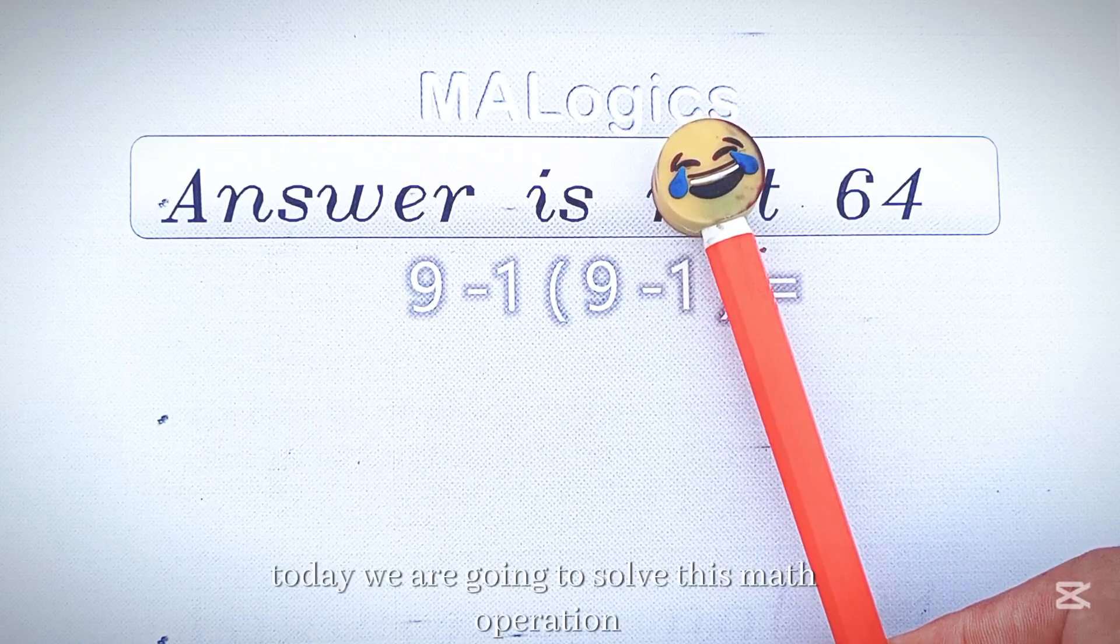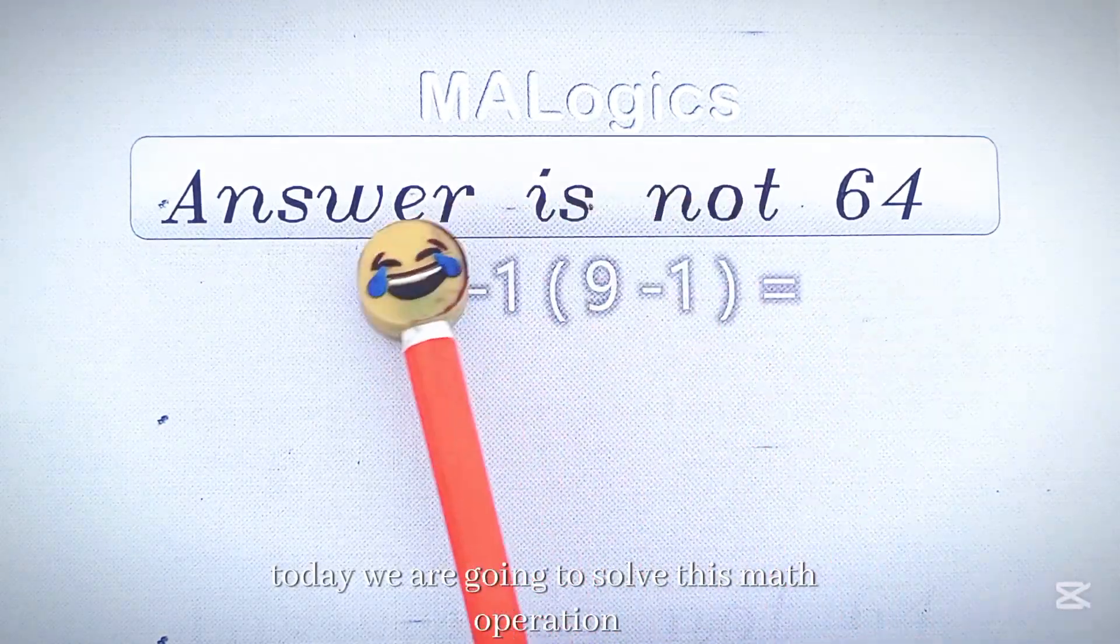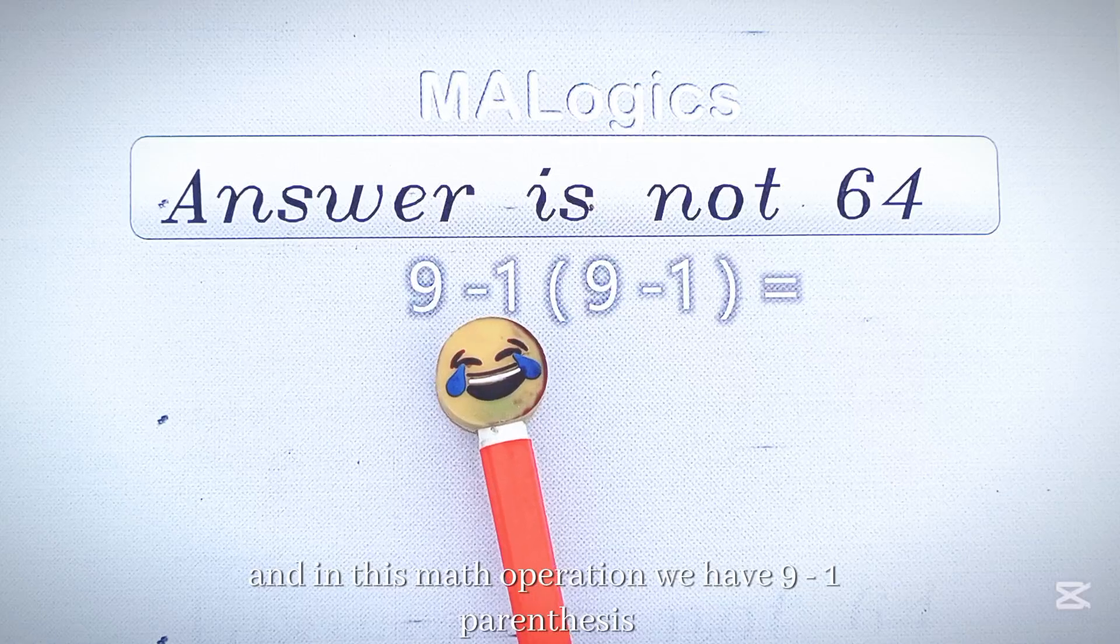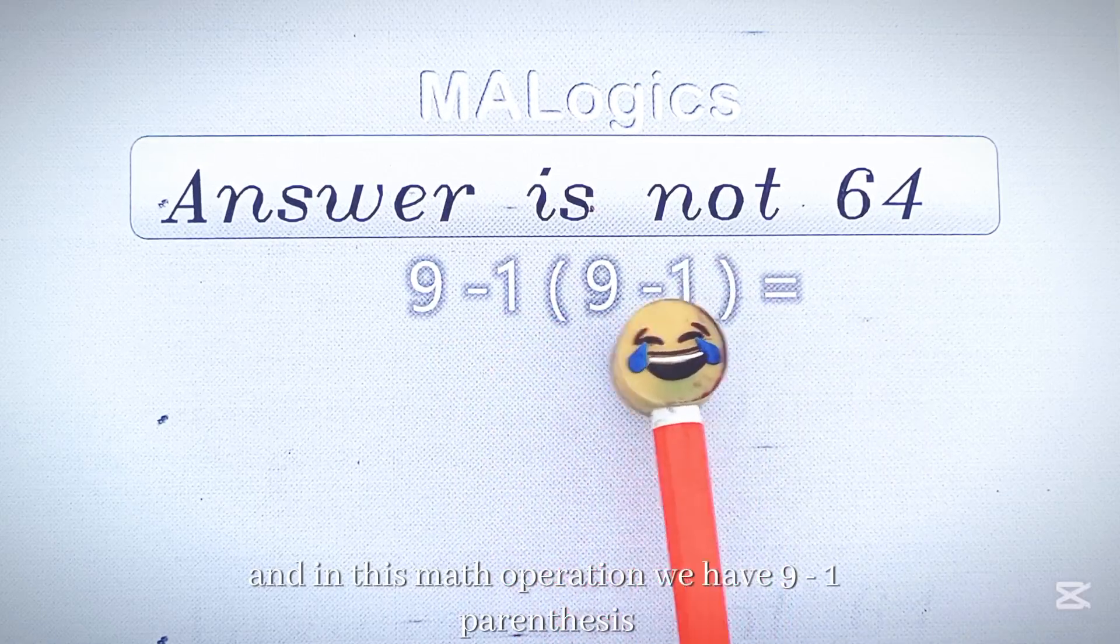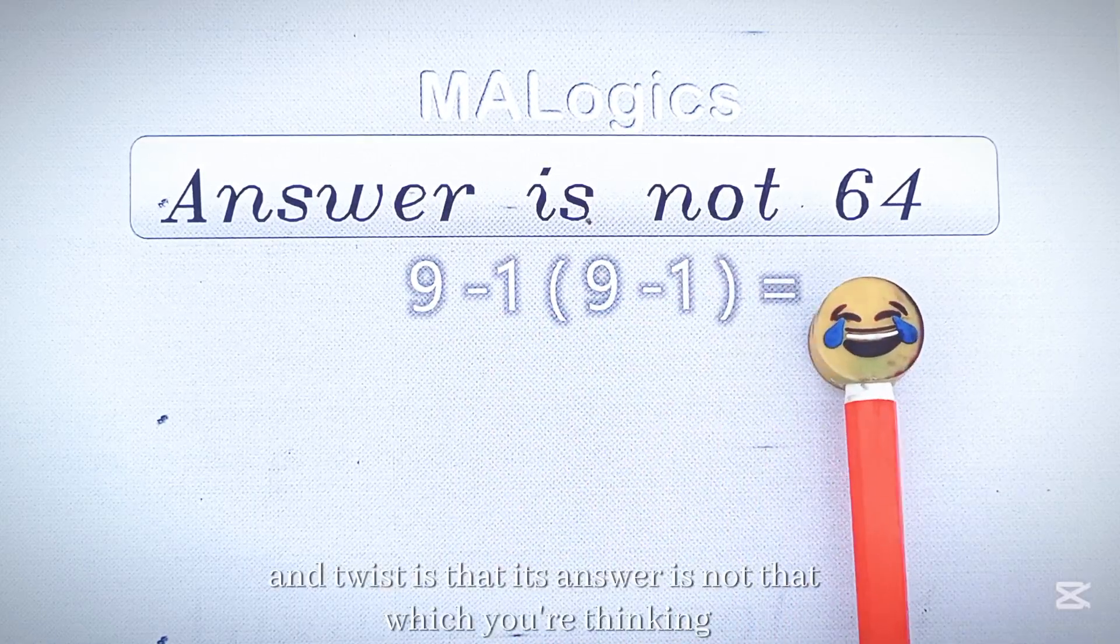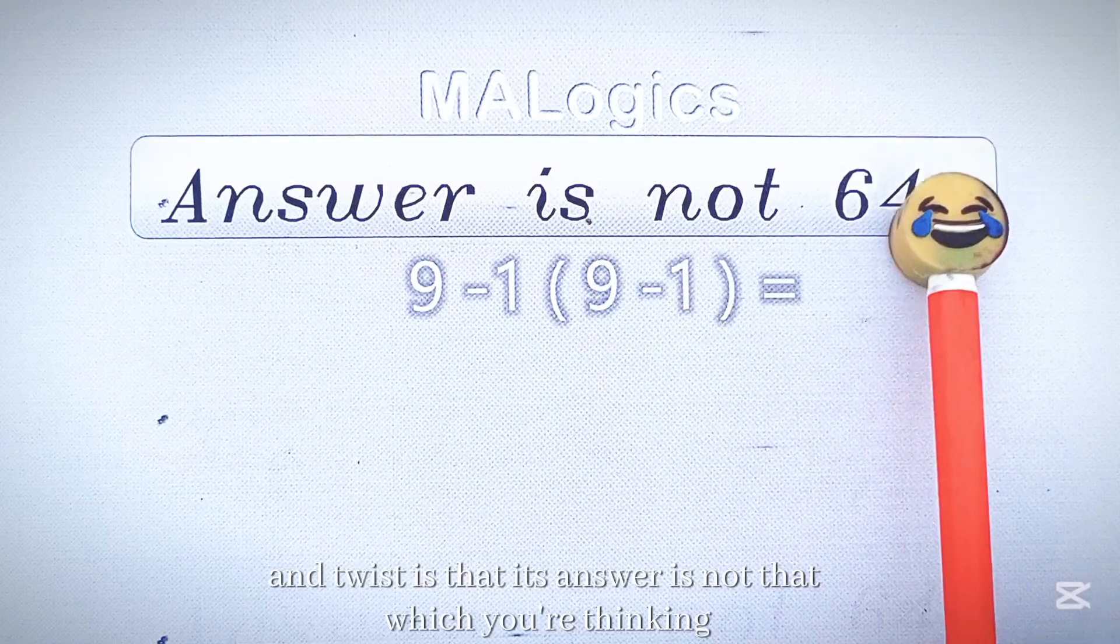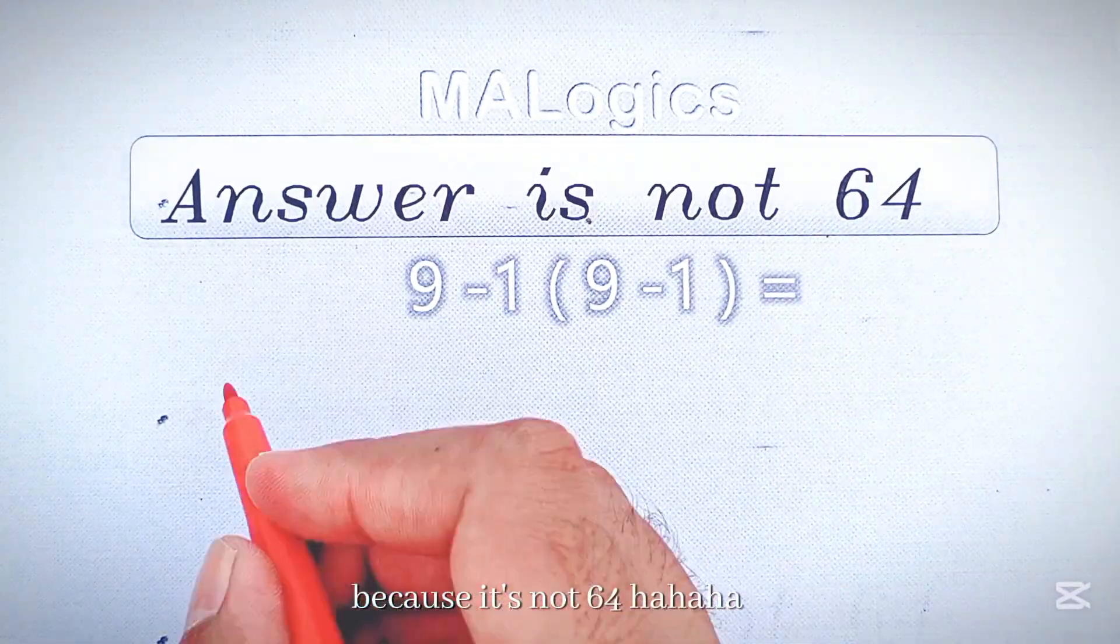Today, we are going to solve this math operation, and in this math operation, we have 9 minus 1, parenthesis 9 minus 1. And the twist is that its answer is not that which you're thinking, because it's not 64.